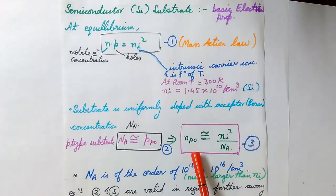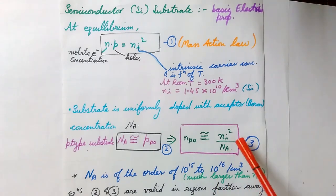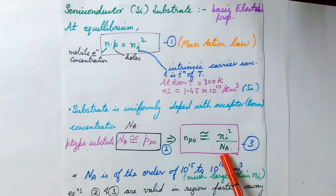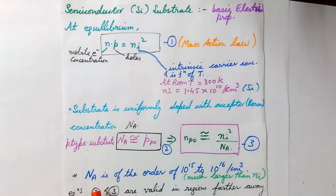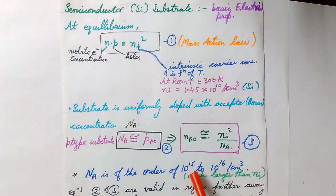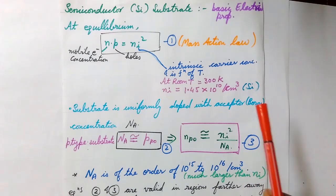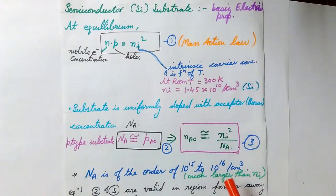The number of electrons in the p-type substrate is nearly equal to ni² upon NA. Here the NA, that is the number of acceptor atoms used, is of the order of 10^15 to 10^16 per centimeter cube. If you see in the intrinsic, the order is 10^10, so it is far more larger than that of ni.